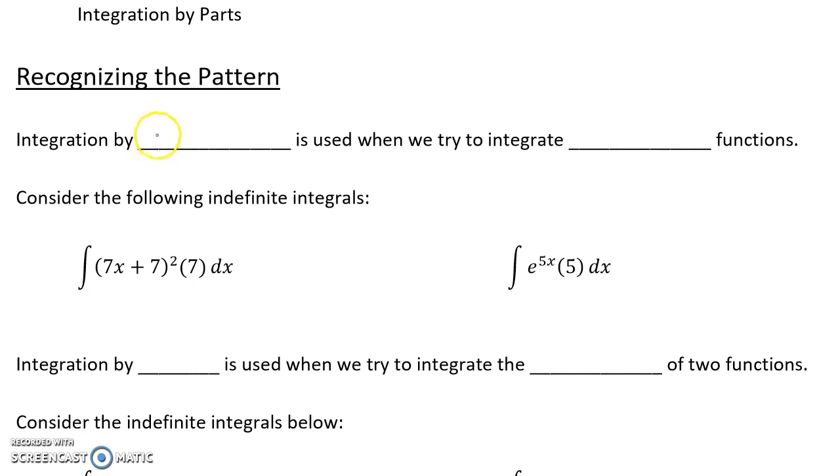So the first technique we can talk about is integration by substitution, and in particular it's used whenever we try to integrate composite functions. Or another way to say that is that integration by substitution is used to undo the chain rule.